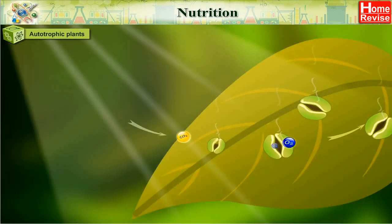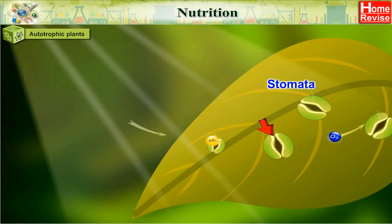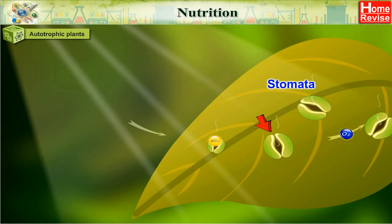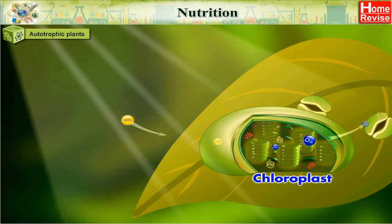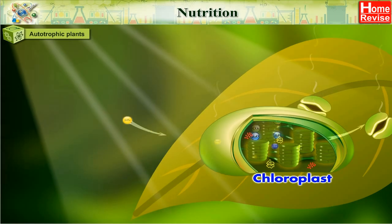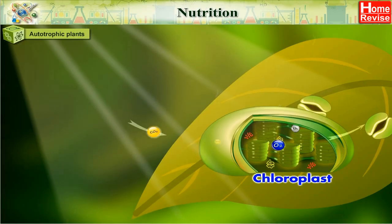The leaves have microscopic openings called stomata, through which they take in carbon dioxide from the air. The chloroplasts present in the leaves contain chlorophyll, which absorbs sunlight, helping to convert carbon dioxide and water into food.